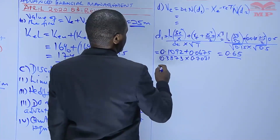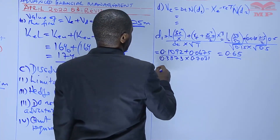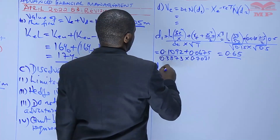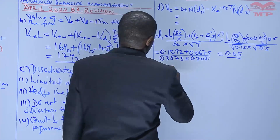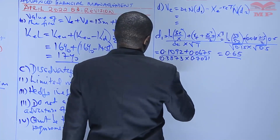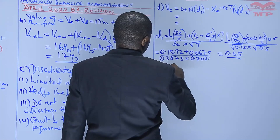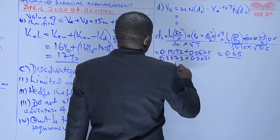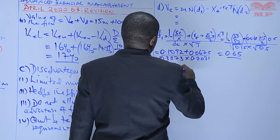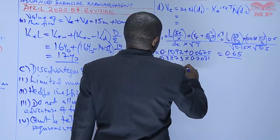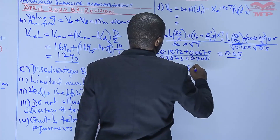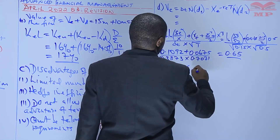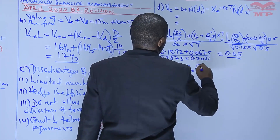Then D2. The formula for D2 is D1 minus the standard deviation times the square root of time.